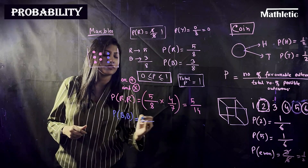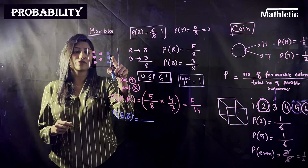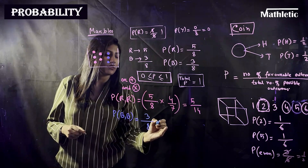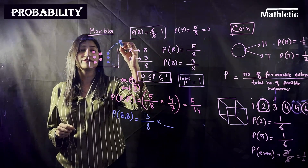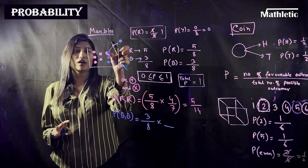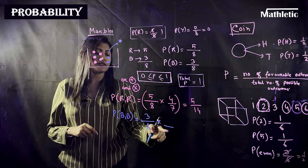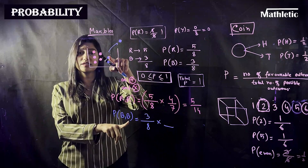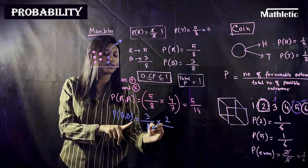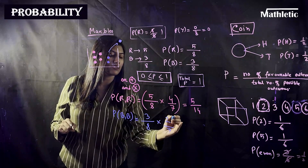Similarly, if you need to find the probability of getting two blue marbles, when selecting the first blue marble the probability is three out of eight. After removing one blue marble, you have two blue marbles left out of seven total. So the probability of two blue marbles is three-eighths multiplied by two-sevenths.